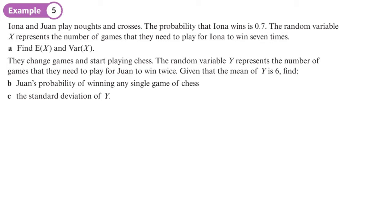So let's start with this and write down the notation. This is a negative binomial distribution. The number of successes is seven - she needs to win seven times - and the probability of success is 0.7.